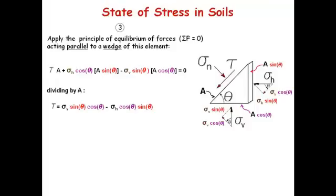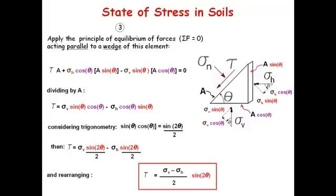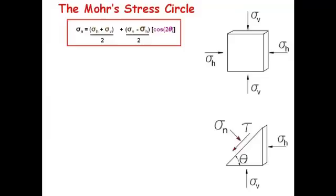Applying a trigonometric relation, we end up with the derivation that the shear stress is related to the difference vertical to horizontal divided by 2 and that times the sine of the angle 2 theta. Those two equations are defined by a circle and that is what the Mohr circle is about.